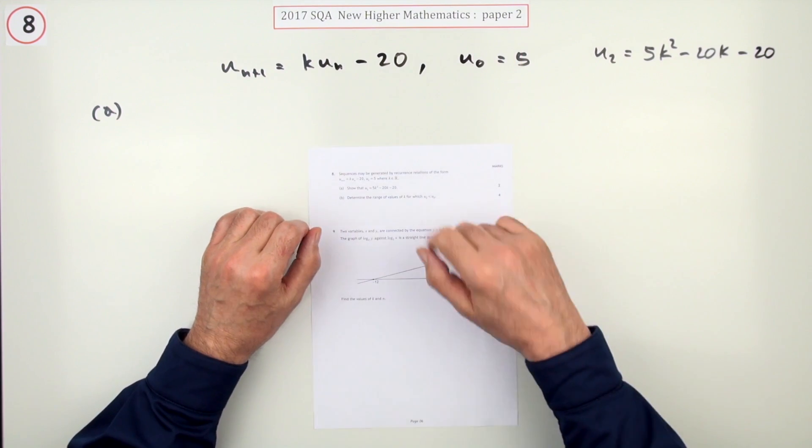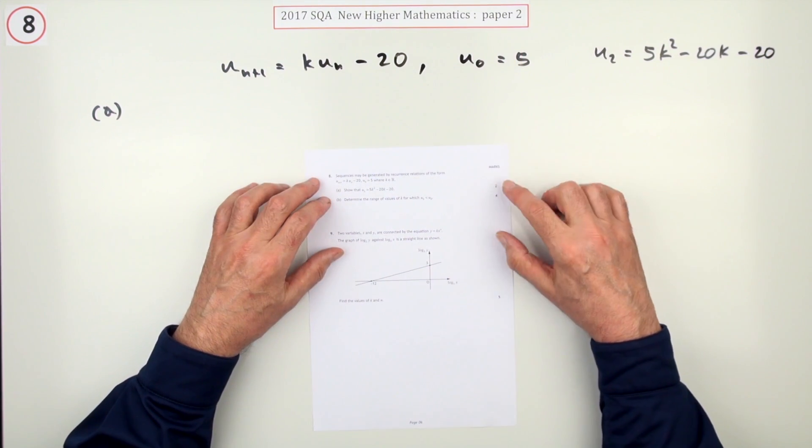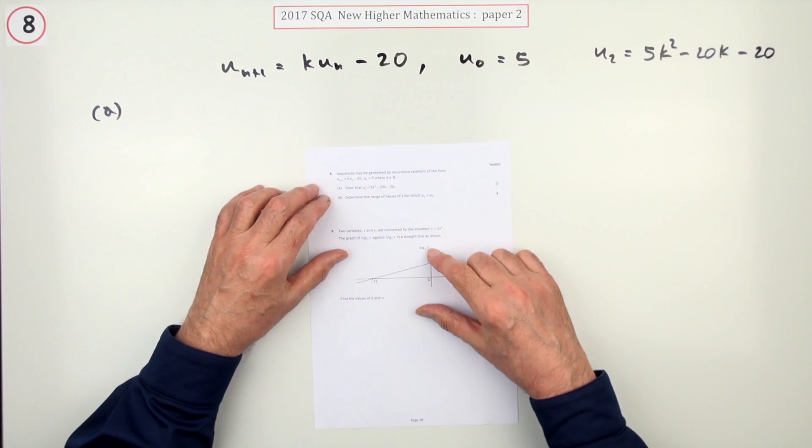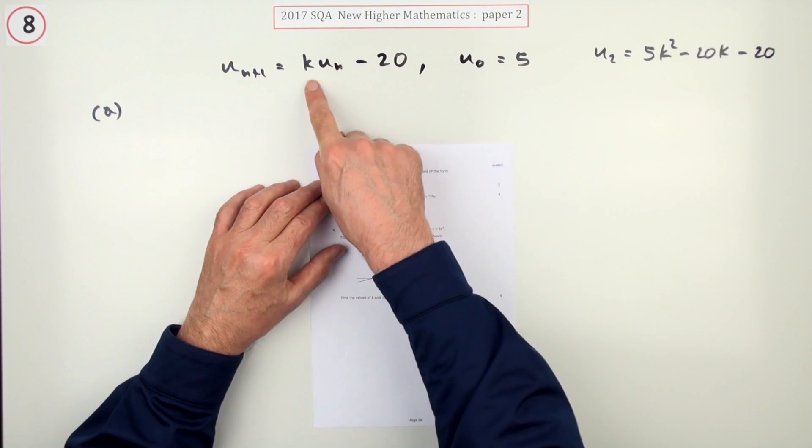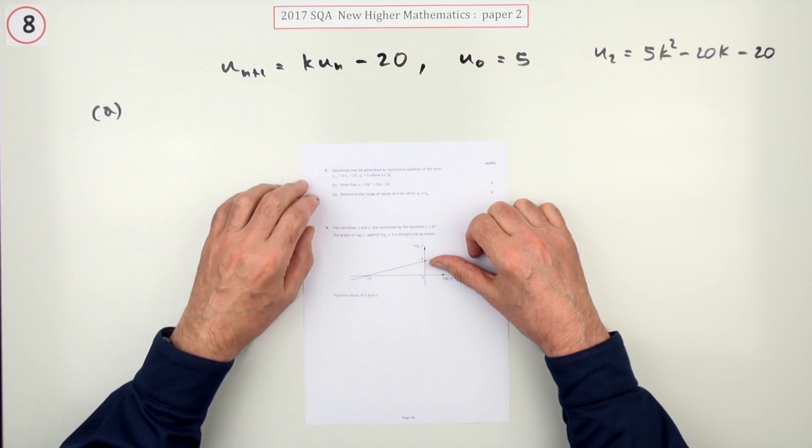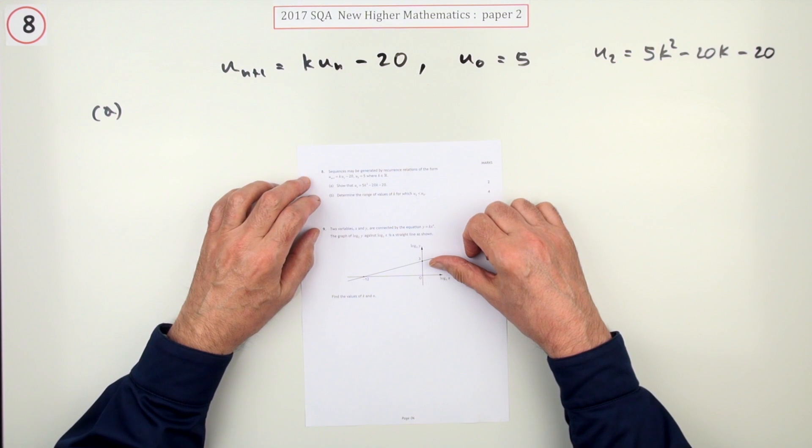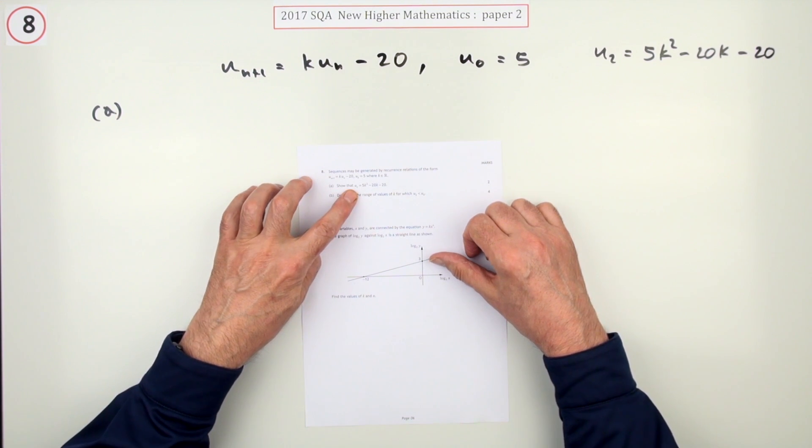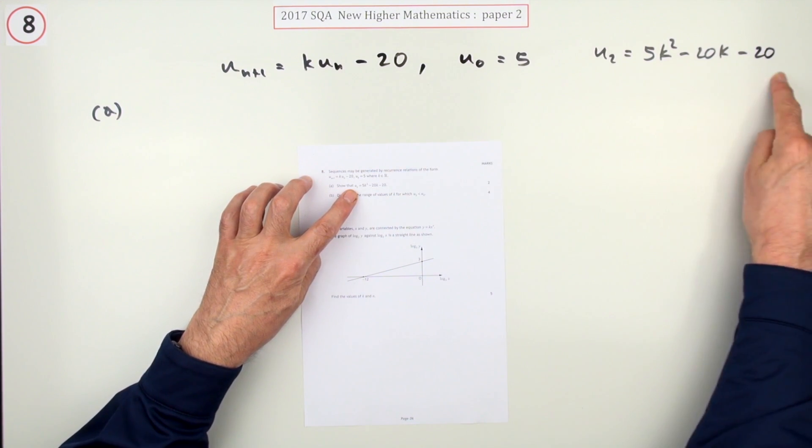Number eight from paper two of the 2017 New Higher. Six marks, recurrence relation question with this unknown factor k. Show that the second term, this initial value, is given by this.